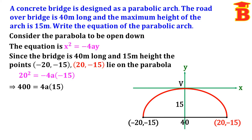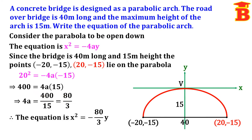Now 20² = 400. On the right side, minus times minus is plus, giving 400 = 4a × 15. Cross-multiplying, 4a = 400 ÷ 15 = 80/3. Therefore, substituting into x² = −4ay, we get x² = −(80/3)y, and multiplying both sides by 3 gives 3x² = −80y. This is the equation of the parabolic arch.